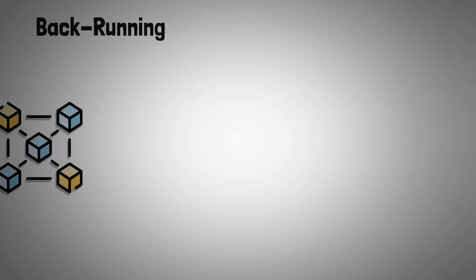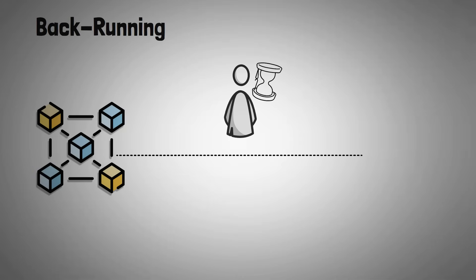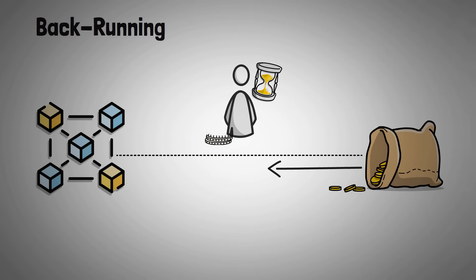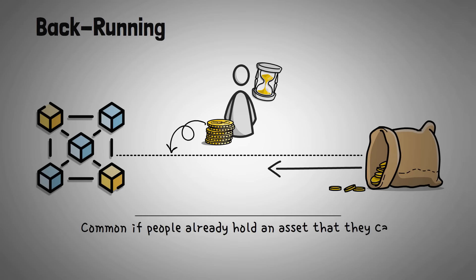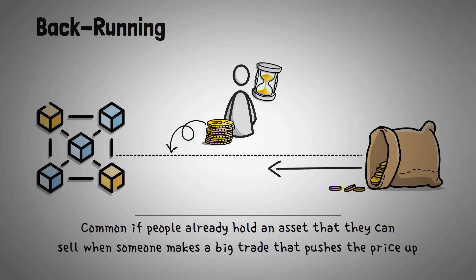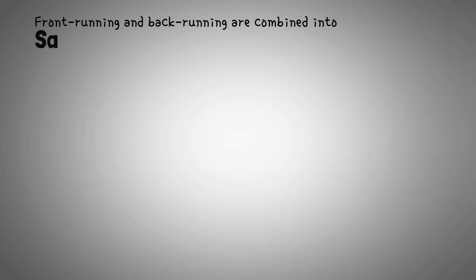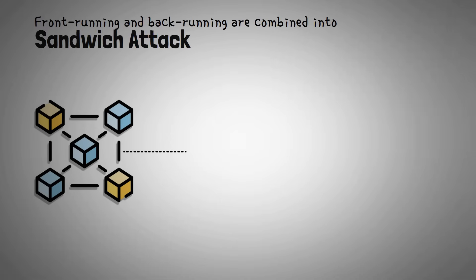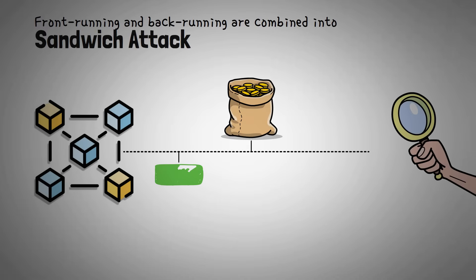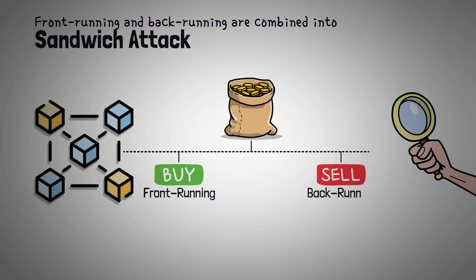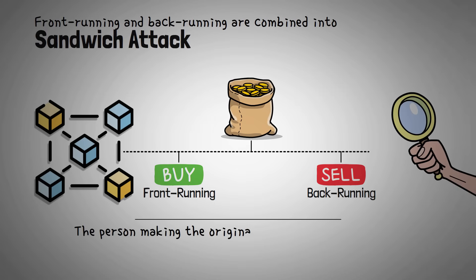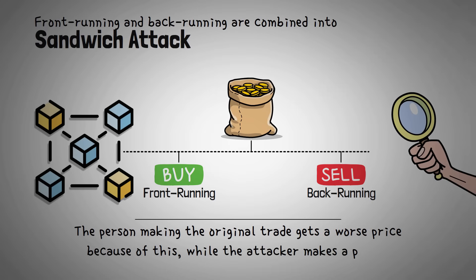A similar tactic is called back-running, which works in the opposite way. Instead of cutting in line, a trader waits for a big trade to go through, then immediately places their own trade to take advantage of the price movement. This is especially common if people already hold an asset that they can sell when someone makes a big trade that pushes the price of that asset up. Sometimes, front-running and back-running are combined into something called a sandwich attack. This is when someone sees a large trade coming, places a buy order just before it, then lets that trade go through, and then places a sell order immediately after it. The person making the original trade gets a worse price because of this, while the attacker makes a profit.